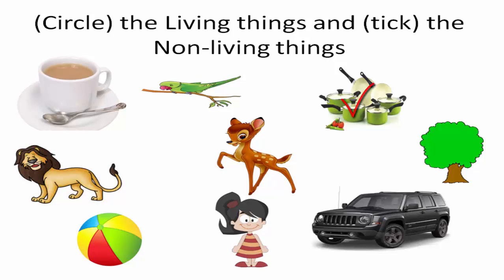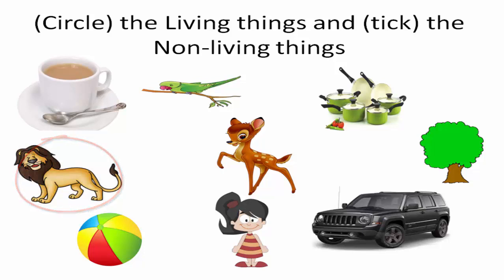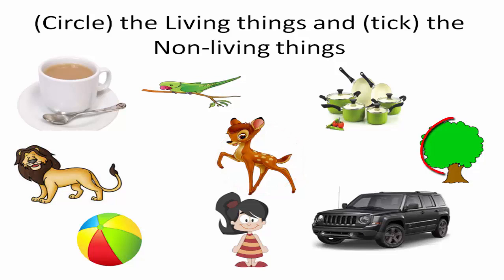Dear children, tell me — is the lion a living thing? Yes, it is a living thing. Circle on lion. Deer — deer is a living thing, we circle on deer. Tree is a living thing because trees need food and water. We circle on tree.